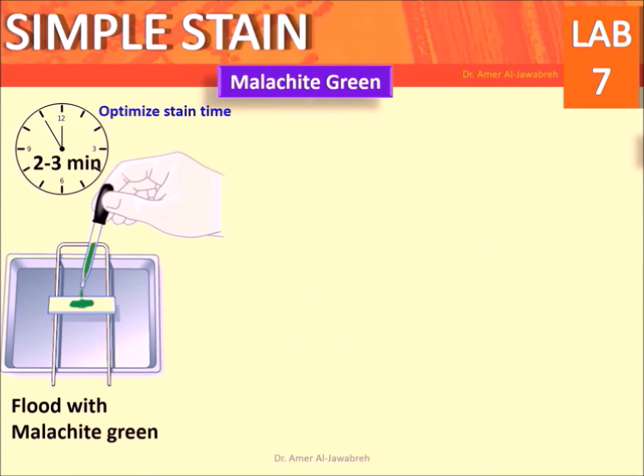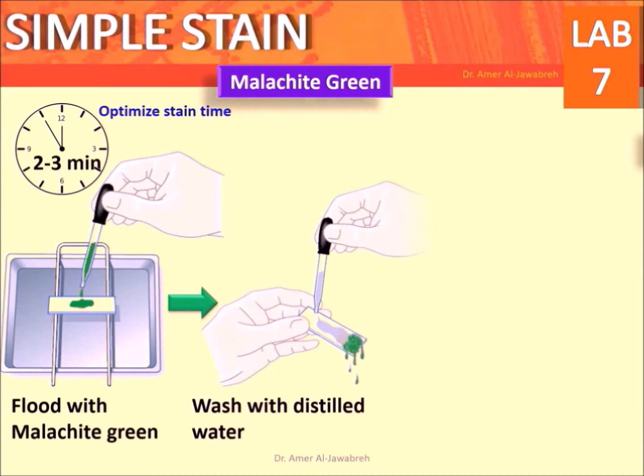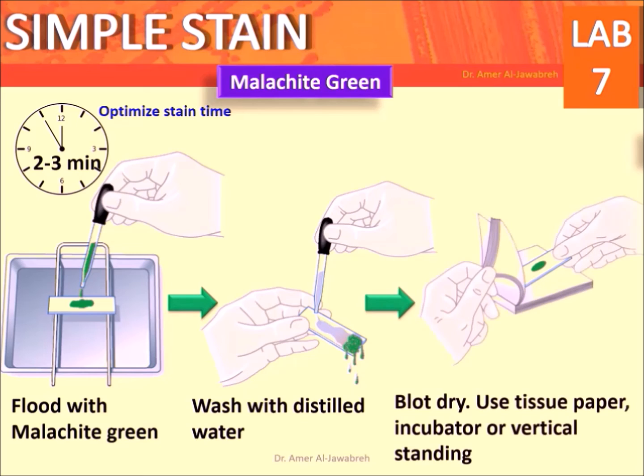Malachite green procedure: flood with malachite green for two to three minutes. Wash with distilled water. Blot dry using tissue paper, an incubator, or by vertical standing.